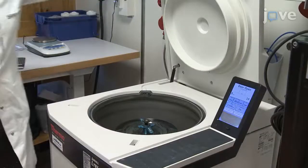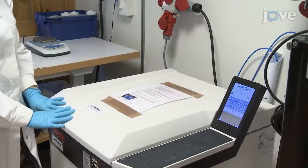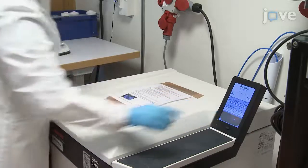Gently centrifuge the syringe filled with the hydrogel ink at 4000 times G to remove trapped air.